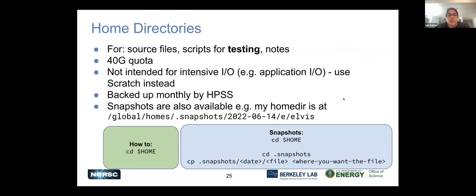It's really important to understand what the home directory is because this can cause problems. It's a place for small scripts and a small amount of data, but the quota — the amount of space in your home directory — is only 40 gigabytes, which is pretty small. It fills up really fast, especially if you're doing conda environments. Conda downloads a bunch of stuff and can clog up your home directory. If you go over this quota, you can log in but you can't run jobs until you clear your quota space.